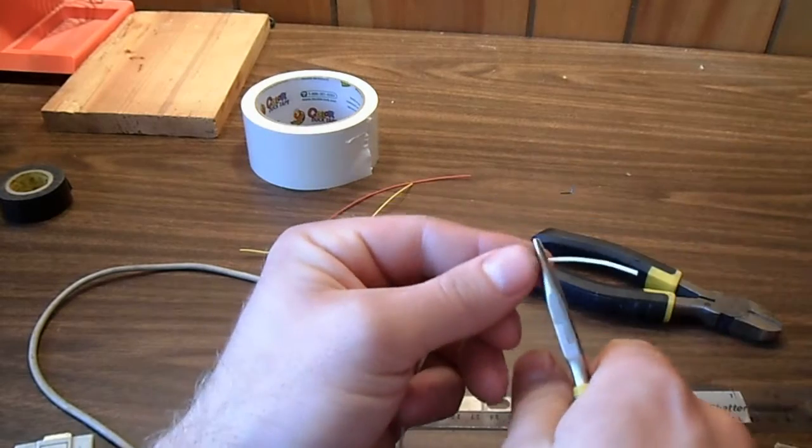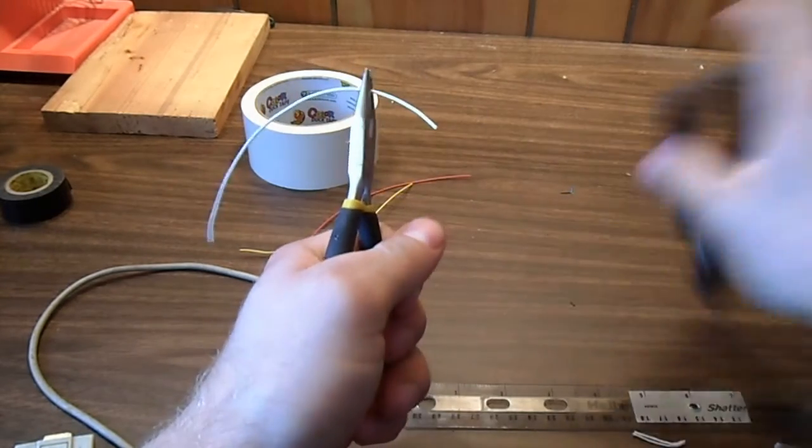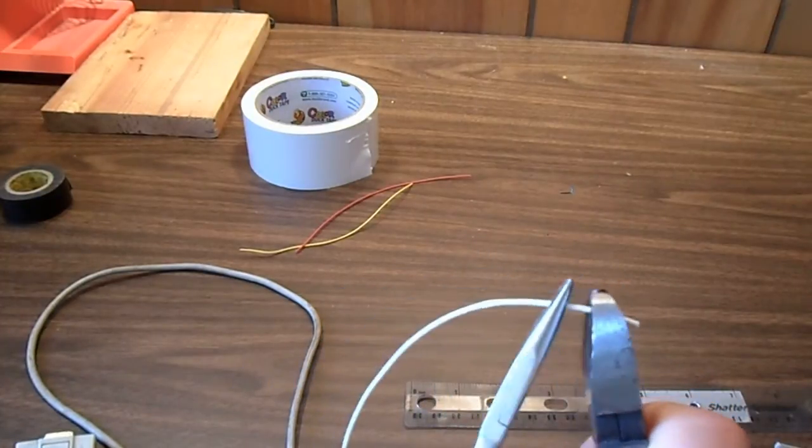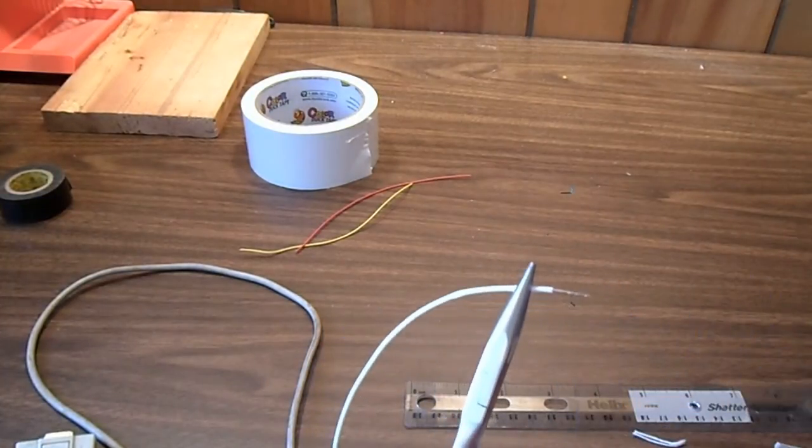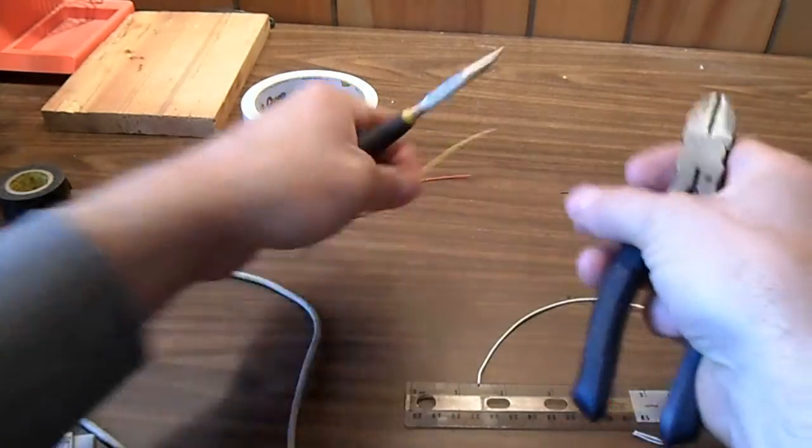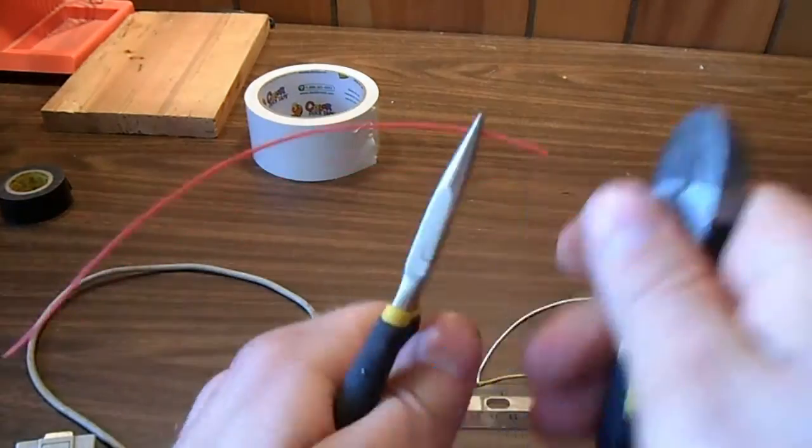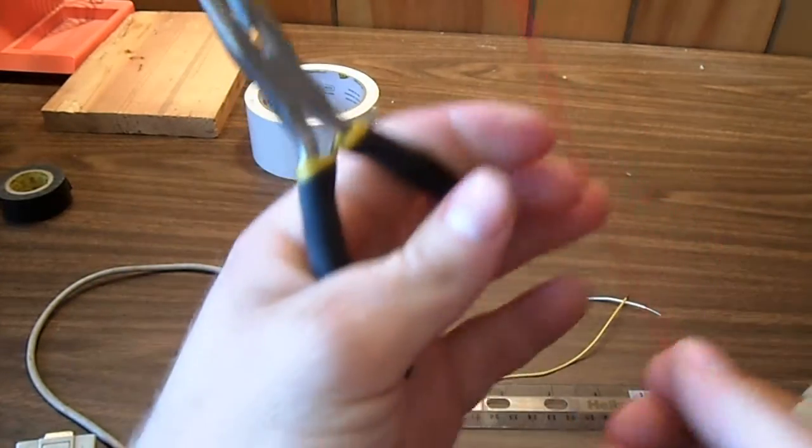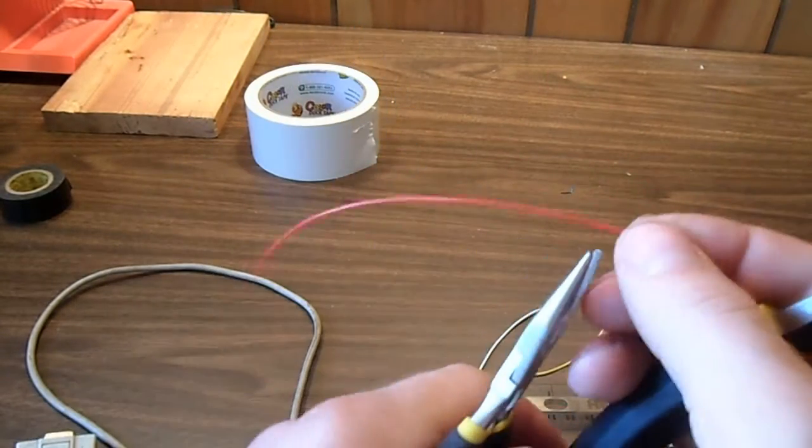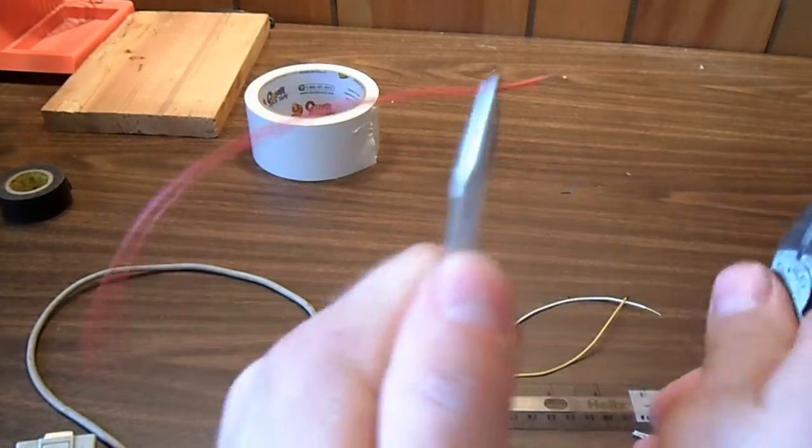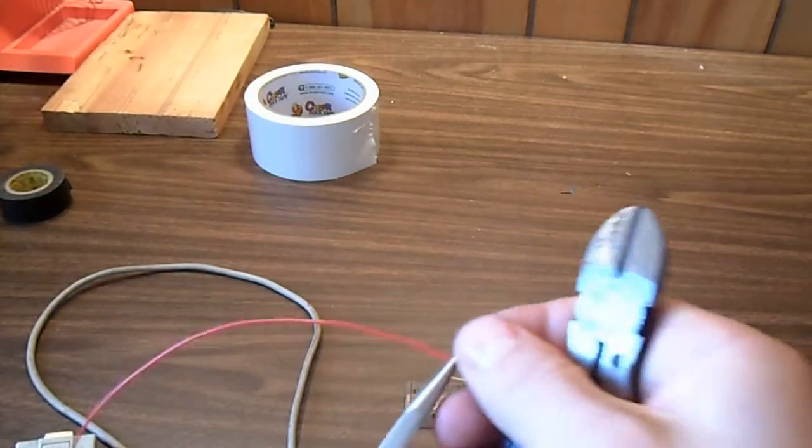Now, strip about a half an inch off each end. Now, on the other end, do about a quarter inch just a little bit, just enough to be able to plug into a breadboard.